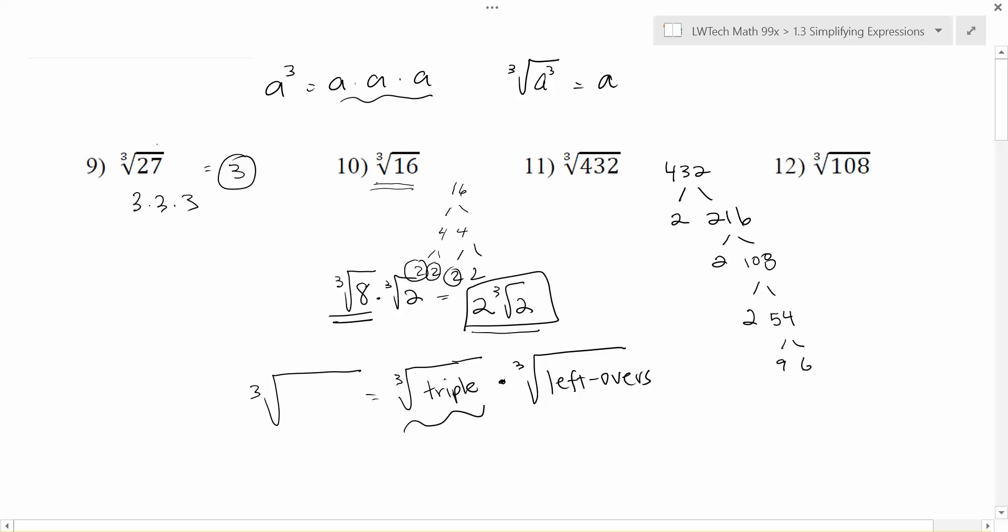54 is 9 times 6. 9 is 3 times 3. 6 is 2 times 3. And now I've got 2, 2, 2, 3, 3, 2, 3.